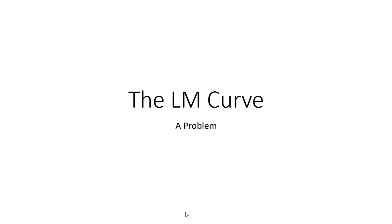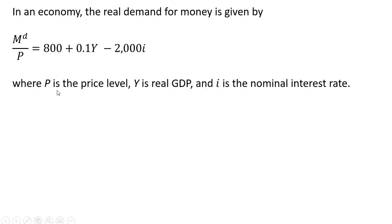Hello, in this video we're going to do an LM curve type problem. In an economy, the real demand for money is given by the following equation. P is the price level, Y is real income, real output, or real GDP, and I is the nominal interest rate.